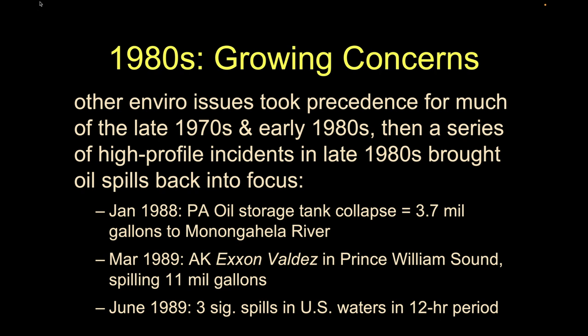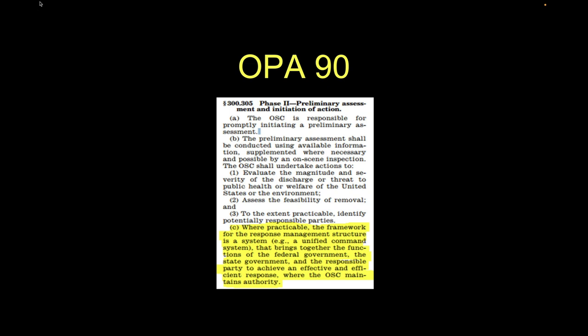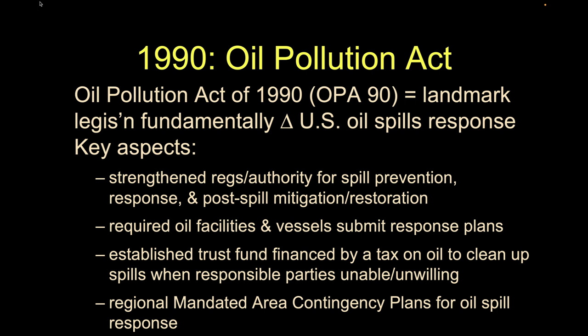By the end of the 80s, several events brought oil spills back to public attention. A Pennsylvania oil storage tank collapsed and spilled oil next to a river. The Exxon Valdez spilled in Prince William Sound in 1989. Then in June of 1989, we had three major spills within 12 hours at different places. People were saying, what's going on? We need to do something different. In particular, the Exxon Valdez spill really drove a lot of concern, leading to OPA-90, the Oil Pollution Act of 1990.